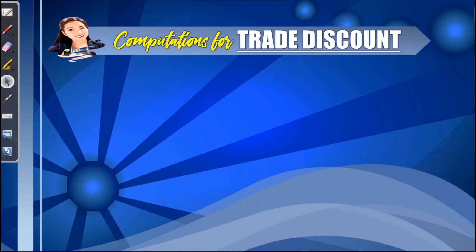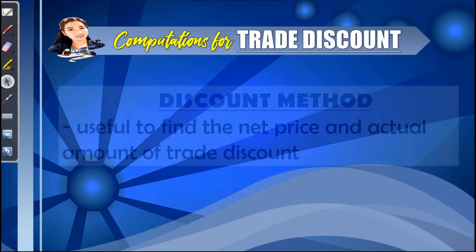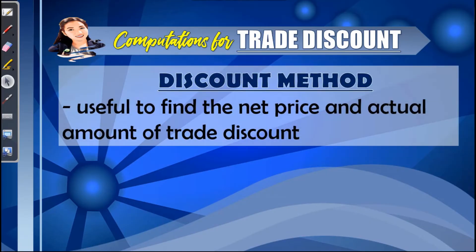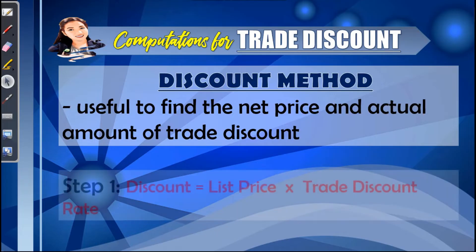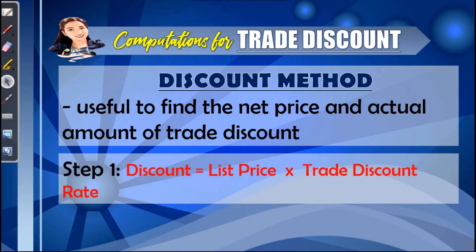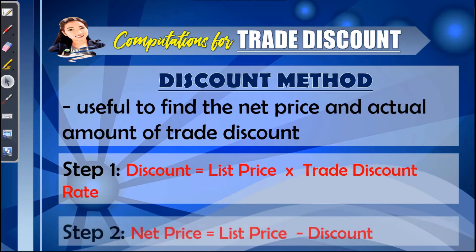So how do we compute for the trade discounts? Take note that we have two methods. The first is the discount method — it is useful to find the net price and the actual amount of trade discount. To do this: step one, find the discount, which is equal to the list price times the trade discount rate; step two, the net price is equal to the list price minus the discount.